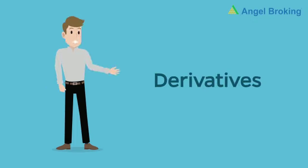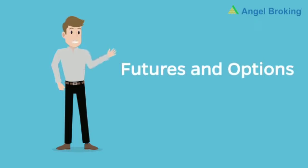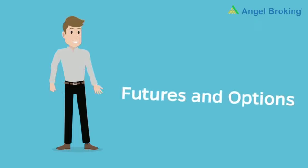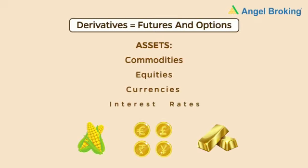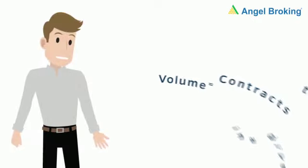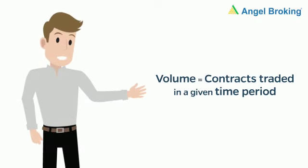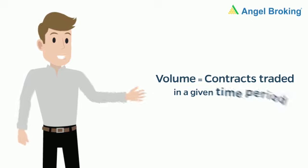Derivatives are financial instruments like futures and options that derive their value from underlying assets. These assets could be commodities, equities, currencies, or even interest rates. Volume aapko yeh batata hai ki yeh given time period meh ek derivative ke kitne contracts trade huye.